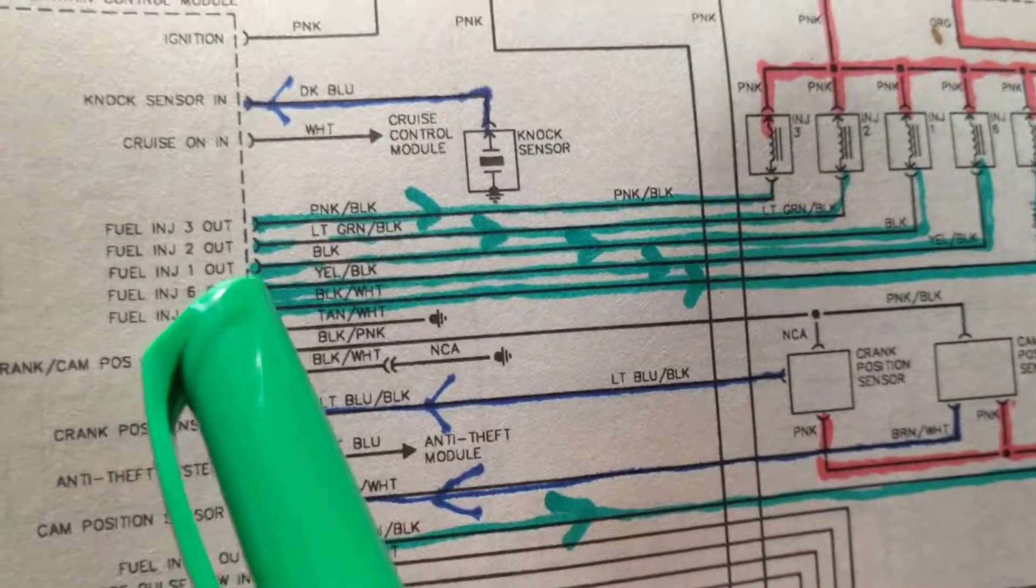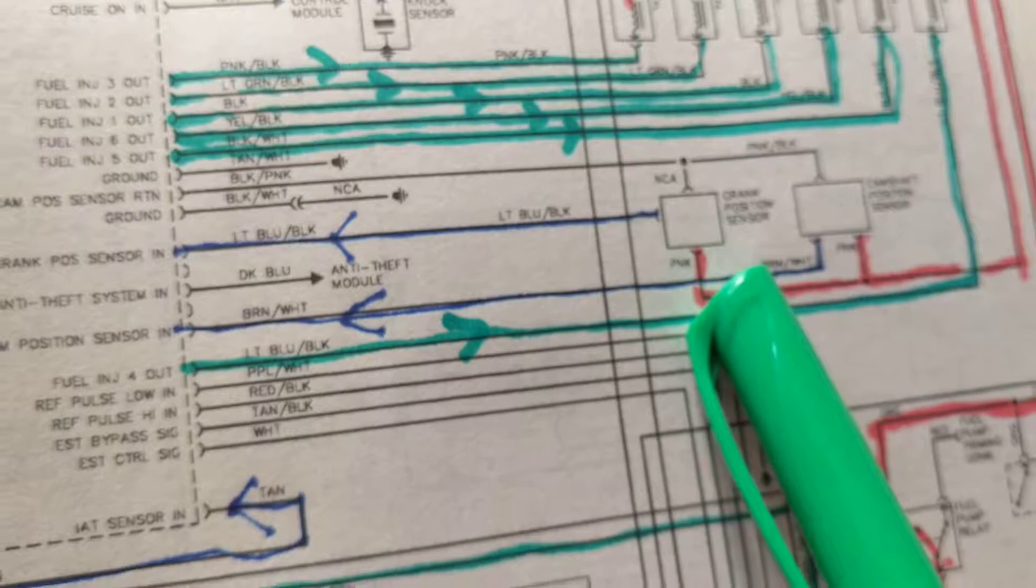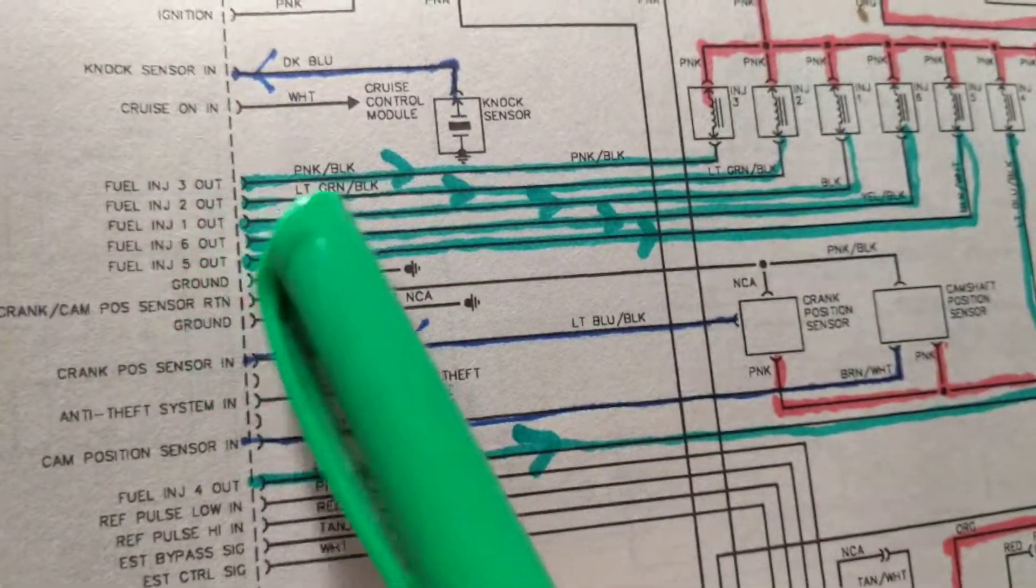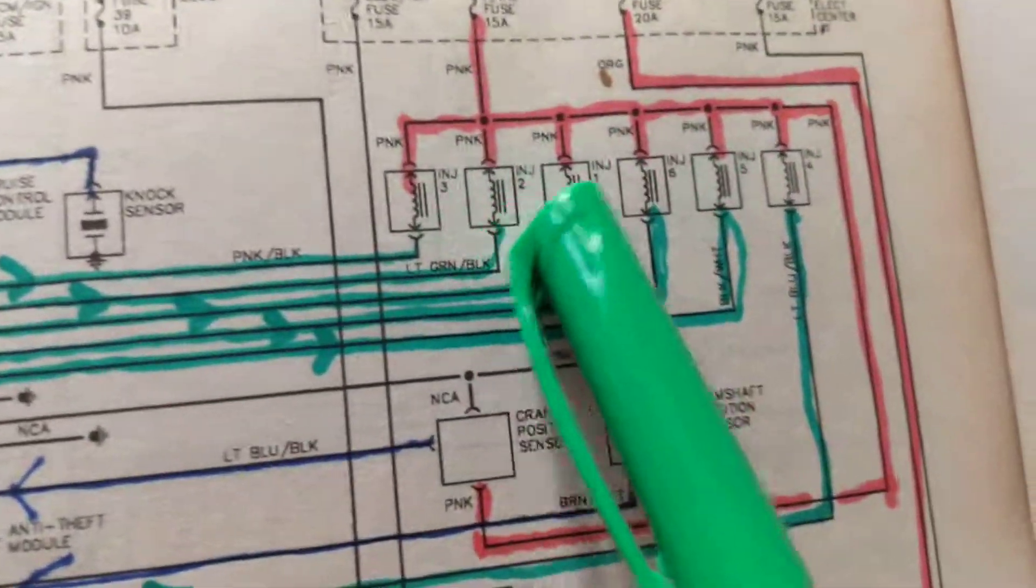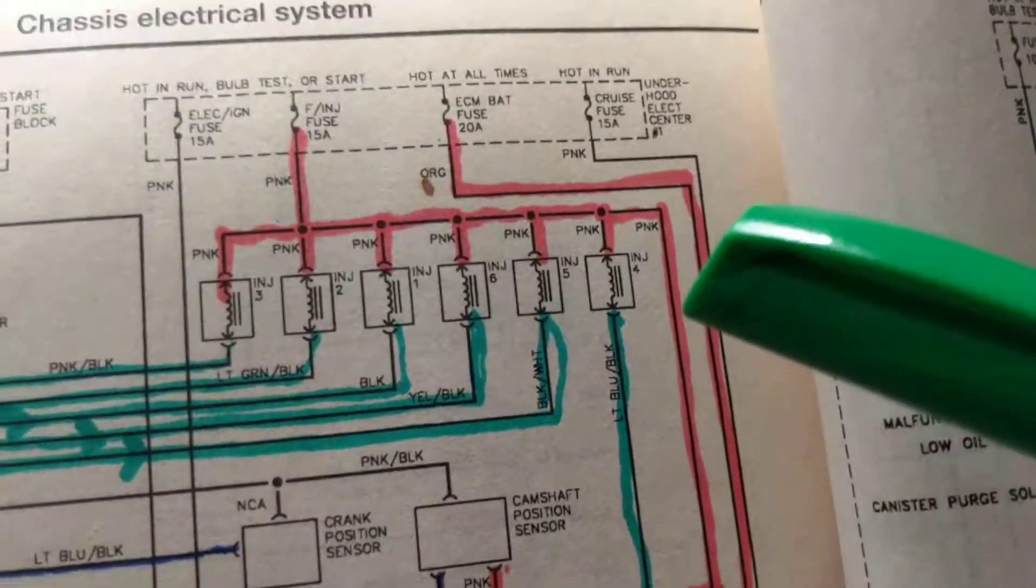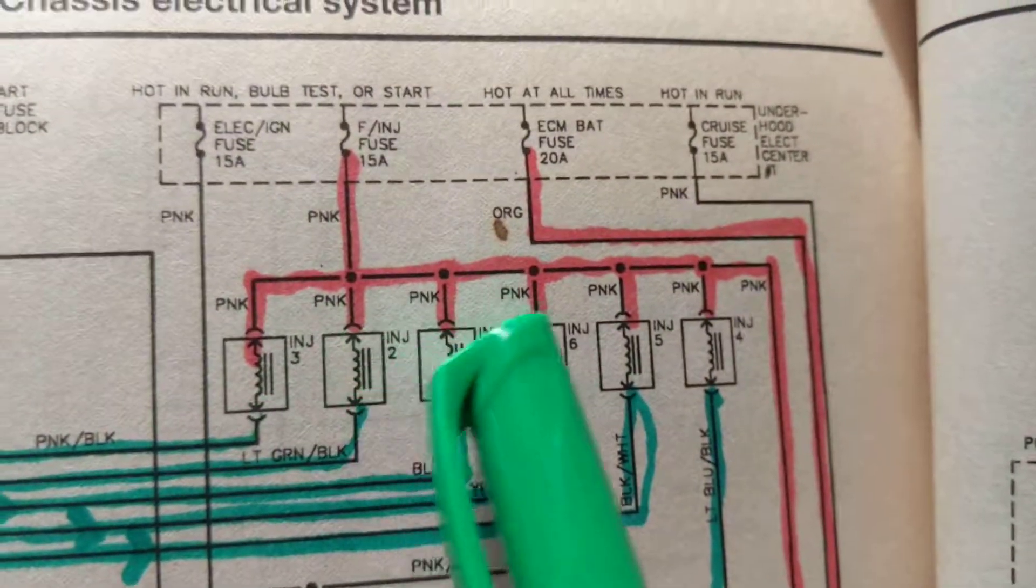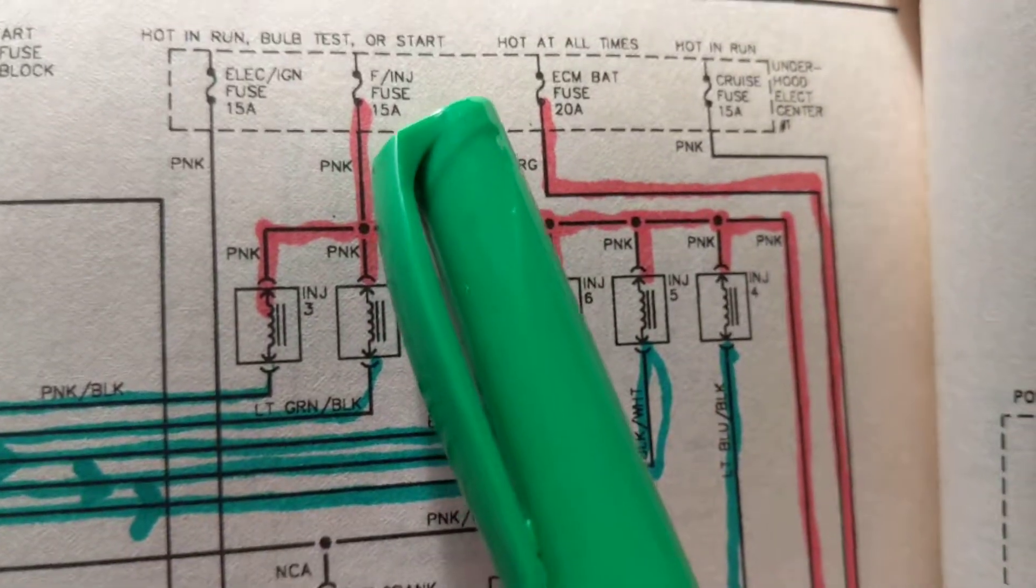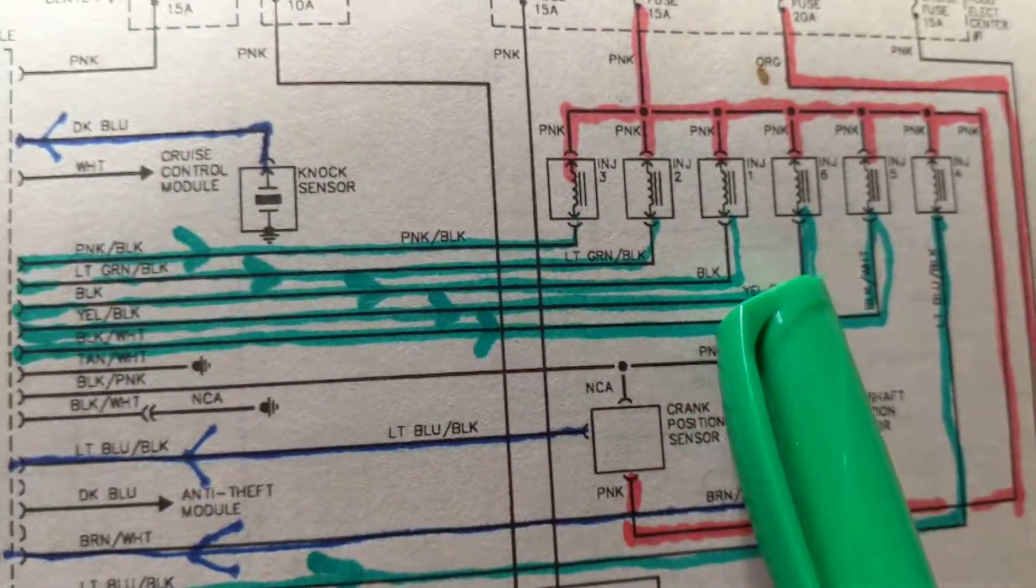The computer has these inputs from the sensors telling it what's going on. It reacts to the situation by controlling these fuel injectors, which are valves, coils that open and close to allow more fuel. Now as you see, they're all tied - one side is all tied to the fuse, to B plus. The other sides, whenever you have a coil, you need a ground.